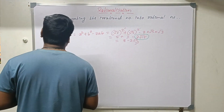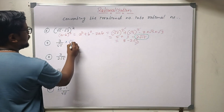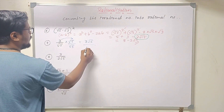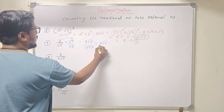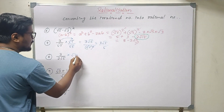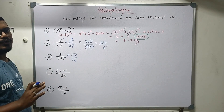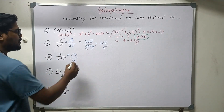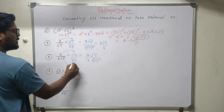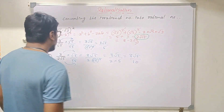Now let us see how to rationalize 3 by root 5. The procedure is to multiply numerator and denominator by root 5, giving 3 root 5 divided by root 5 whole square, which equals 3 root 5 by 5. Similarly for the next sum, multiply only by root 5 over root 5 — not by 2 root 5. You will get 3 root 5 divided by 2 into 5, which is 3 root 5 by 10.